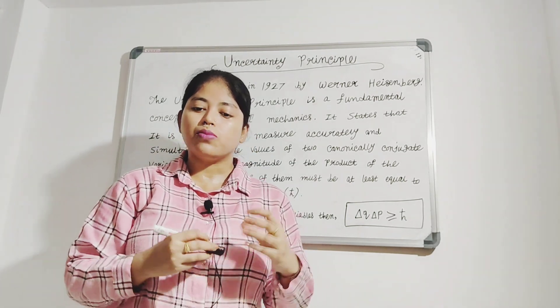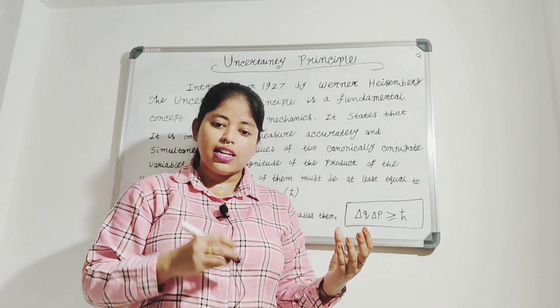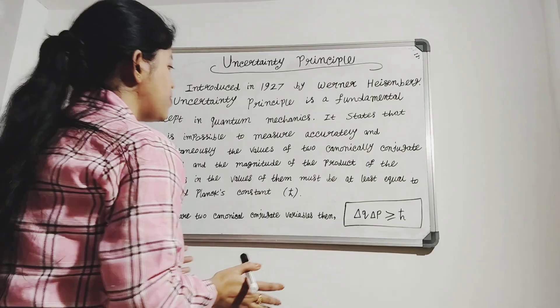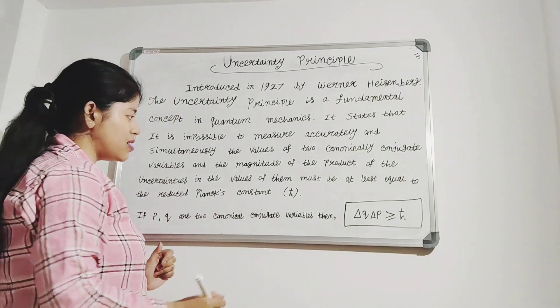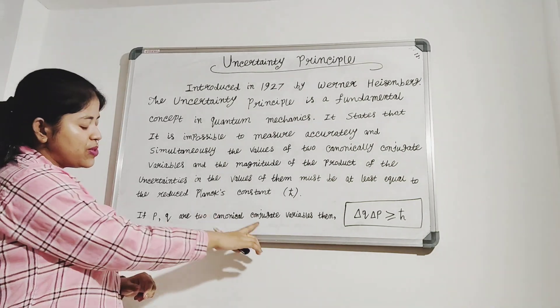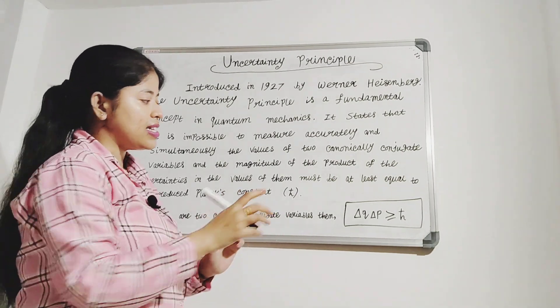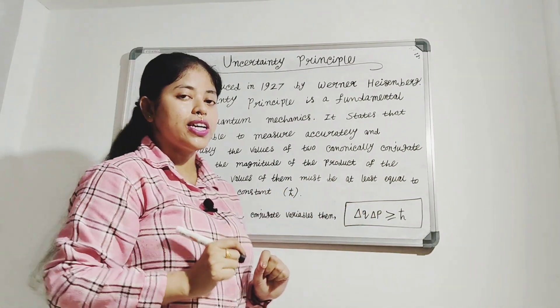In other words, the more accurate one property is measured, the less will be the accuracy of the other. So from this example you can easily see that p and q are two canonically conjugate variables, and delta q delta p is greater than or equal to h-cut.